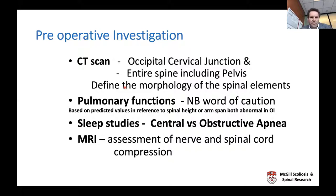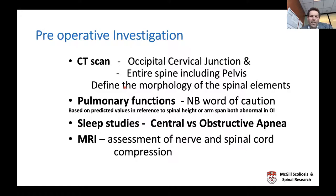Preoperative workup—applicable to scoliosis, basal invagination, and spondylolisthesis—should include a CT scan for bony anatomy. Because the bony anatomy is so distorted in these children, plain X-rays often hide what you need to see. Getting 3D reconstructions with axial and sagittal images gives a much better understanding of bony anatomy, what is impinging nerve roots, and how to stabilize the segment.